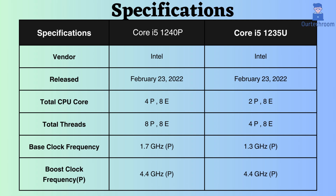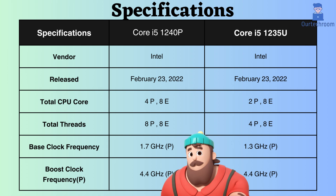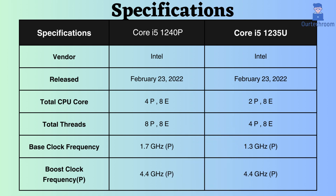Looking at the base clock frequency, the Core i5-1240p operates at 1.7 GHz for its performance core, whereas the Core i5-1235u runs at 1.3 GHz. With a higher base frequency, the Core i5-1240p is comparatively better under normal CPU load. Under heavy CPU load, both processors support a boost frequency of 4.4 GHz for the performance core, which is beneficial for mid-range processors.